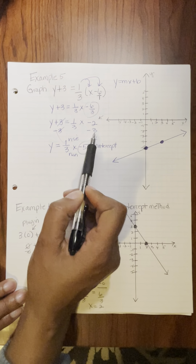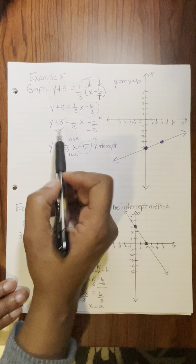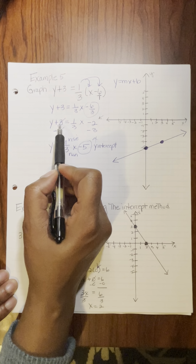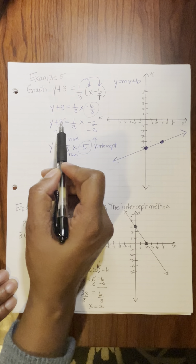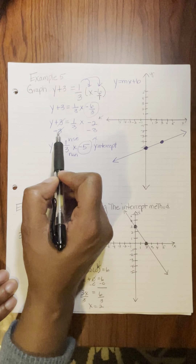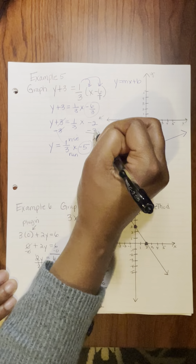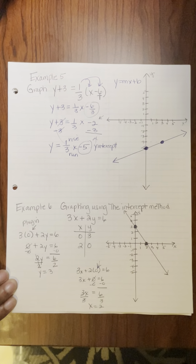Now I want the 3 over here underneath the negative 2, so I need to do the inverse — the inverse of a positive 3 is a negative 3. So negative 2 minus 3: my calculator gives me negative 5.